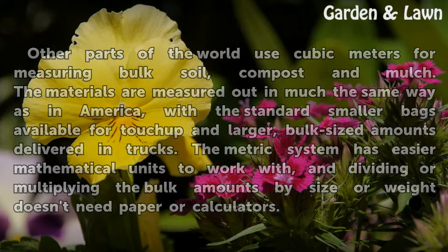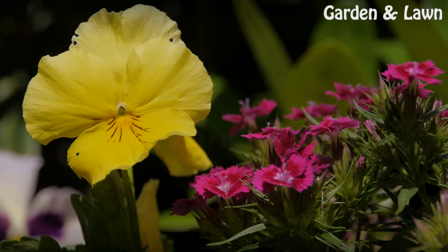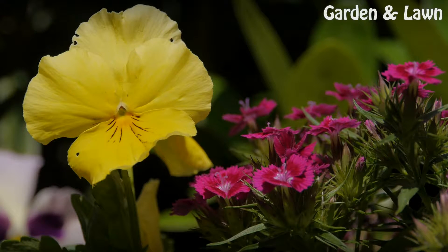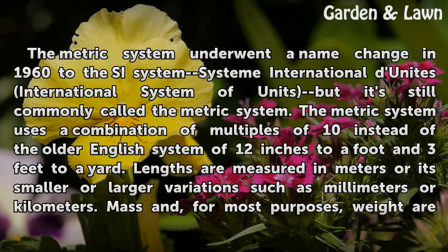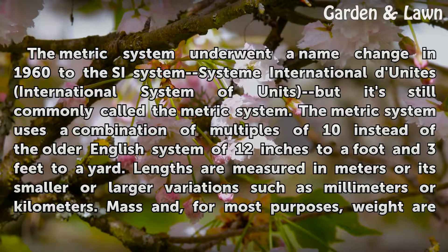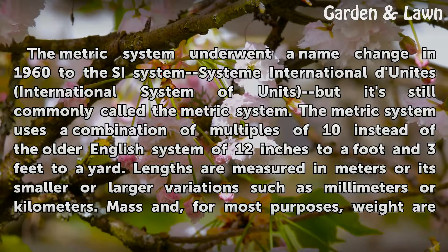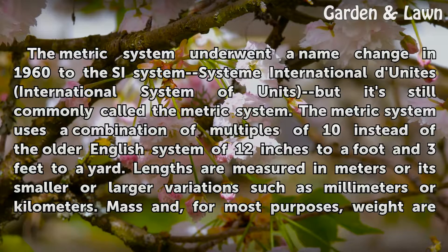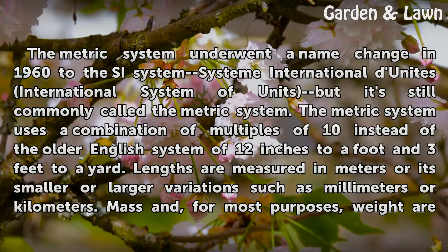International: The metric system underwent a name change in 1960 to the SI System — Système International d'Unités, or International System of Units — but it's still commonly called the metric system. The metric system uses multiples of 10, instead of the older English system of 12 inches to a foot and 3 feet to a yard. Lengths are measured in meters or its smaller or larger variations, such as millimeters or kilometers.